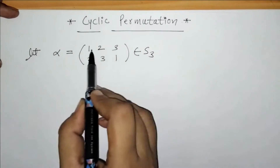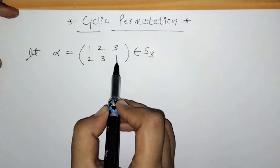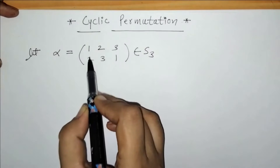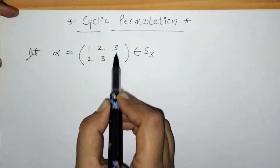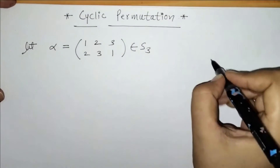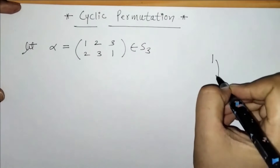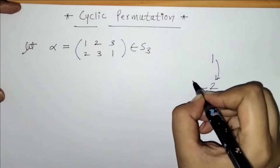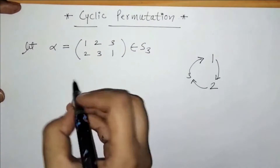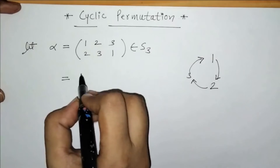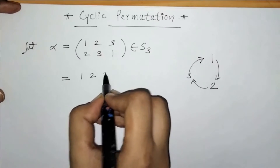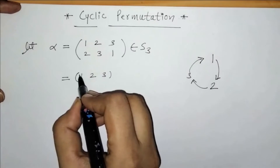Now, we know that the second row elements denote the images of the first row elements. So here, 1 maps to 2, 2 maps to 3, and 3 maps to 1. We can represent this as: 1 maps to 2, 2 maps to 3, and again 3 maps to 1. So we got one cycle here — 1 maps to 2, 2 maps to 3, and 3 maps to 1.